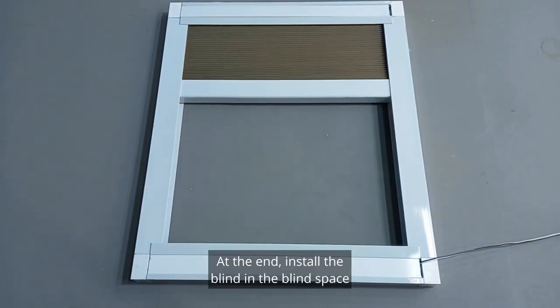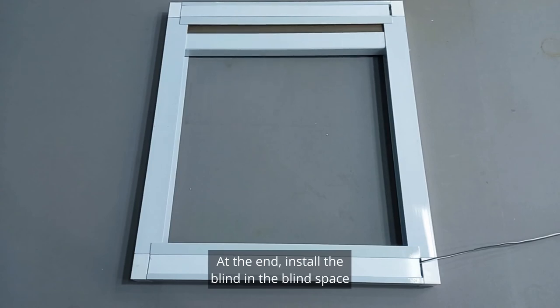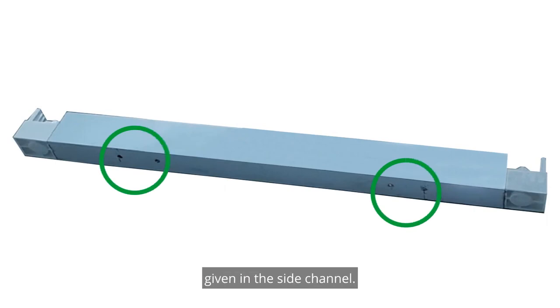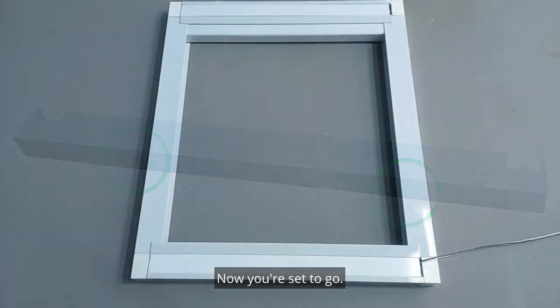At the end, install the blind in the blind space with the help of screw through the pre-drilled holes given in the side channel. Now, you are set to go.